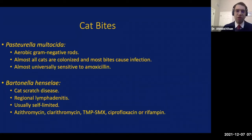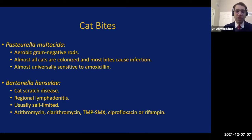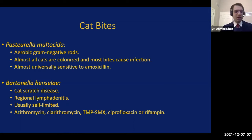Another organism is Bartonella henselae, typically implicated with causing cat scratch disease. It is implicated in both bites and scratches. Most commonly it causes limited regional lymphadenitis; however, especially in immunocompromised individuals, it can cause more severe disease, including generalized lymphadenitis, hepatosplenic disease, neurologic disease, and endocarditis. Treatment options include macrolides, trimethoprim-sulfa, ciprofloxacin, or rifampin.